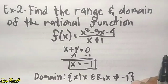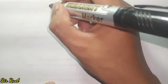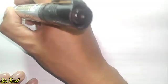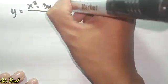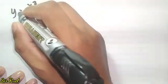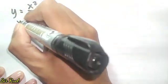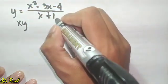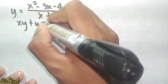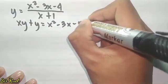To write the domain: x such that x is an element of the real numbers where x is not equal to negative 1. To solve for the range, same process — we replace f of x with y. So we have y equals x squared minus 3x minus 4 over x plus 1. Cross-multiply: y times x gives xy, and y times 1 gives y. Copy the equal sign and the numerator: x squared minus 3x minus 4.